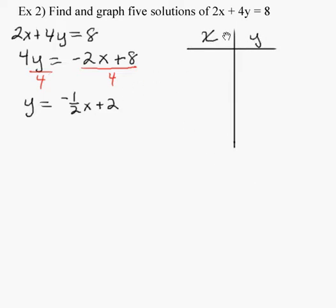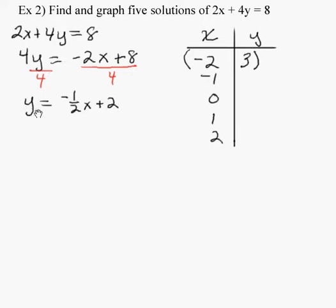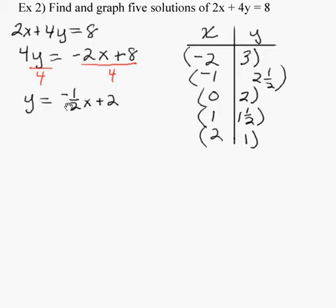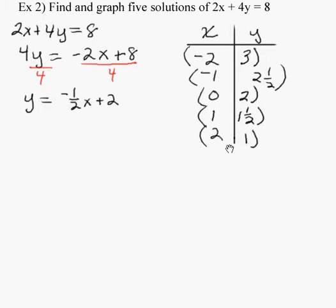Now that we have y by itself, we're going to make a chart of points for x and y. We're going to select some x values. I recommend some negative points, some positive points, and 0. We'll substitute and see what we get. If you put in -2 times -1/2, we get positive 1. Positive 1 plus 2 is 3 for the y value. If we put in -1, -1 times -1/2 is positive 1/2. 1/2 plus 2 is 2 and a half for the y value. If we put in 0, 0 times anything is 0. 0 plus 2 is 2. If we substitute in 1 times -1/2, that's -1/2. 2 plus -1/2 is positive 1 and 1/2. And if we put in positive 2 times -1/2, we'll get -1 plus 2 is positive 1 for the y value.